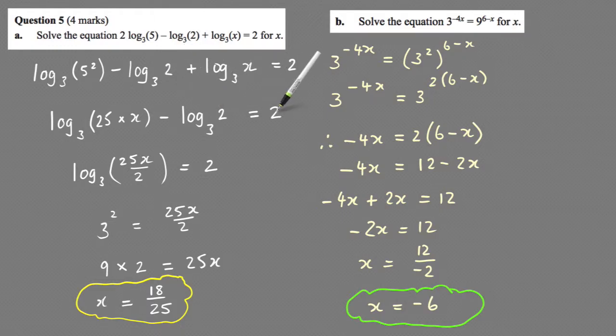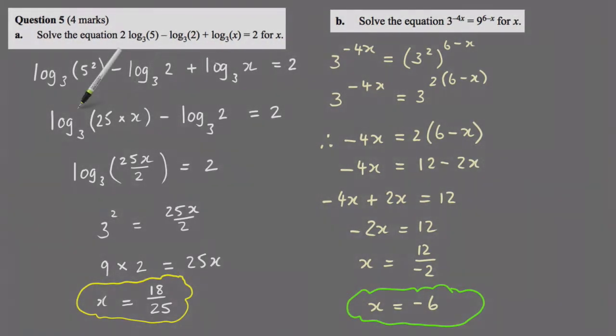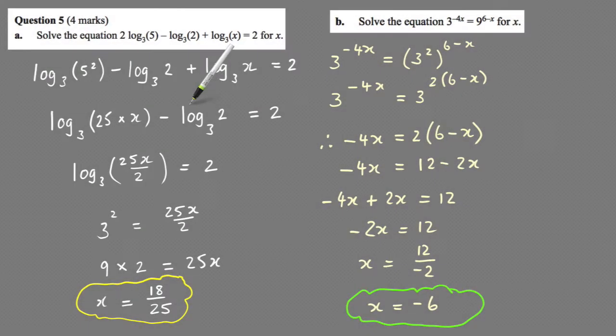Now I'm subtracting two logs with the same base, so the rule is you divide those two things. So it becomes log to the base 3 of 25x divided by 2, and that's equal to 2.